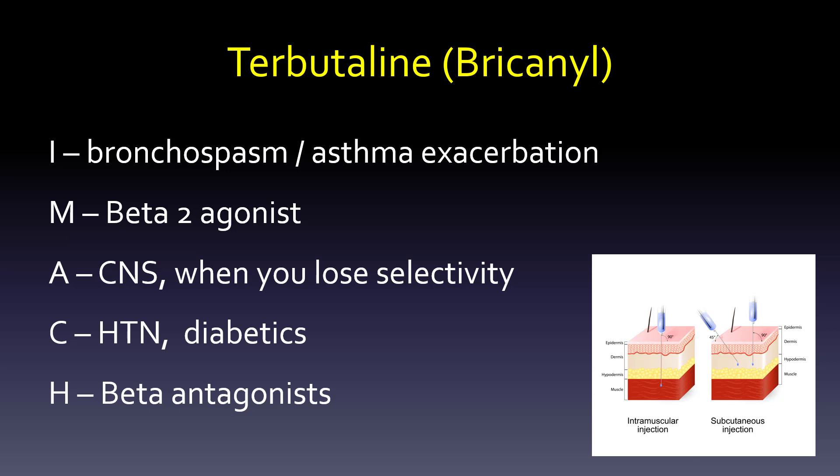Terbutaline — you don't really see this as much. It's indicated for bronchospasm and asthma exacerbation. It's a beta-2 agonist, even shorter-acting than albuterol — super short-acting. You can get those CNS effects when you lose selectivity, and there is a laundry list of adverse effects that can come with terbutaline. Hypertension is a consideration, and diabetics should watch out as well. We also want to watch out for beta antagonists. Sub-Q is where you go with terbutaline, though IM was brought back during COVID to avoid using a nebulizer.